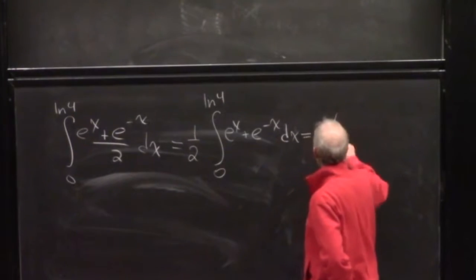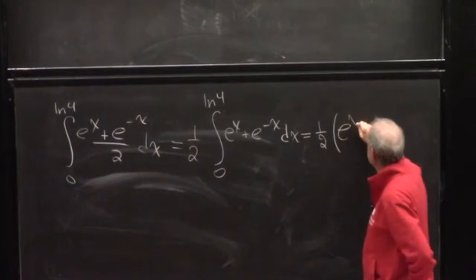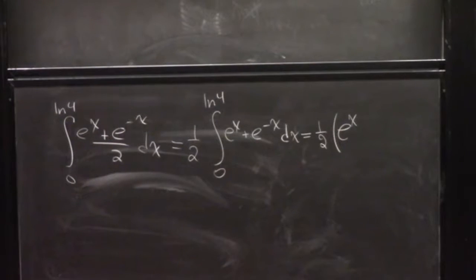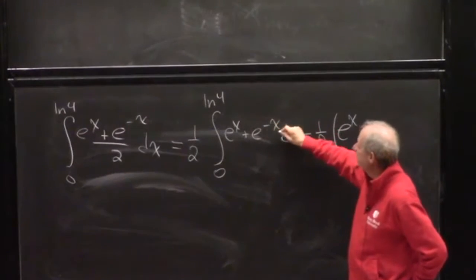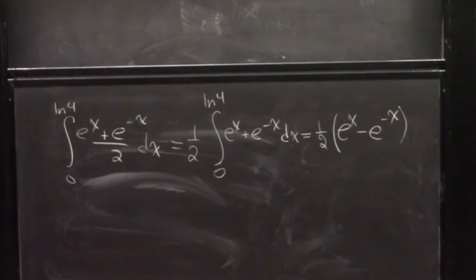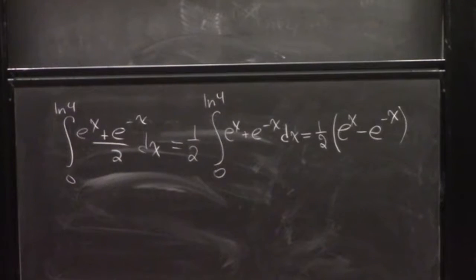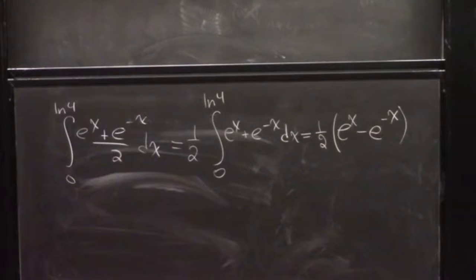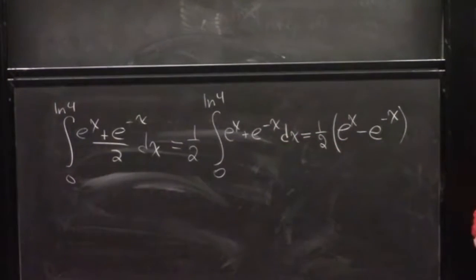What is the antiderivative of e to the x? It's e to the x. And the antiderivative of e to the minus x is e to the minus x divided by negative one, because you divide by the derivative of negative x — so that comes out minus e to the minus x. Remember: when you do the integral of e to the kx, it's e to the kx over k, so here you're dividing by negative one.